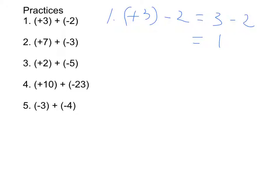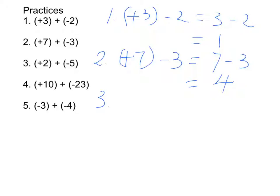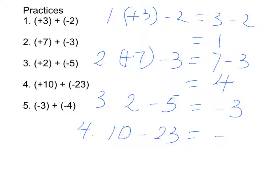For number 2, positive 3 plus negative 3 equals positive 3 minus 3, which means 0. If the result is a positive number, we can omit the positive sign. For number 3, positive 2 plus negative 5 equals 2 minus 5, which gives negative 3. For number 4, positive 10 plus negative 23 can be rewritten as 10 minus 23, and therefore the result is negative 13.